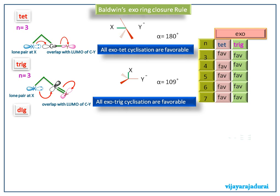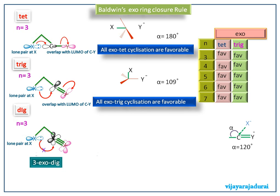Next we see the exo ring closure for DIG hybridized molecule. Here the most preferable approach angle of nucleophile onto the unsaturated SP hybridized CY sigma star will be 120 degrees. For N equals 3, the lone pair cannot attack the LUMO of CY because the alpha is greater than 120 degrees, so it is a disfavored reaction.